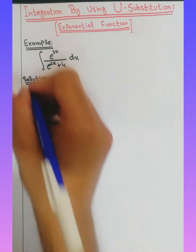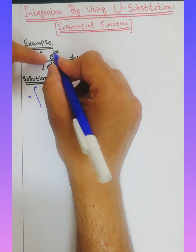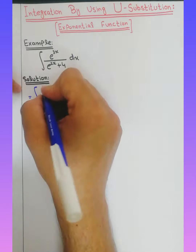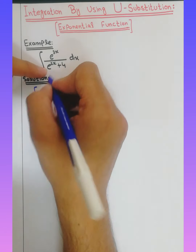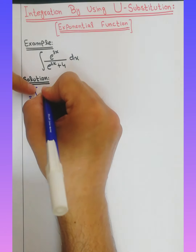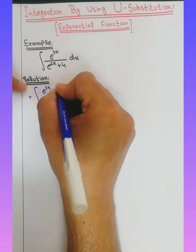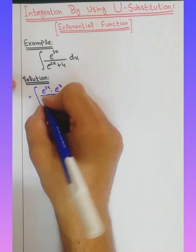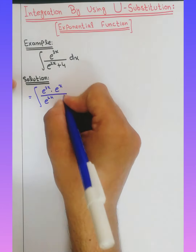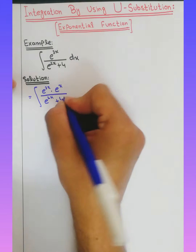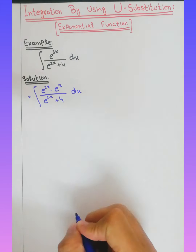So how do we solve this? First of all, we break e^(3x) apart. We write it as e^(2x) times e^x, divided by (e^(2x) + 4) dx.